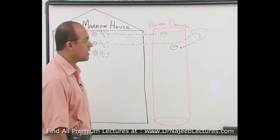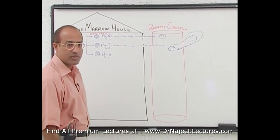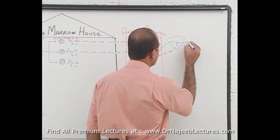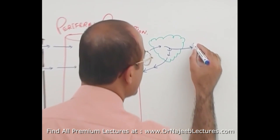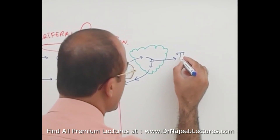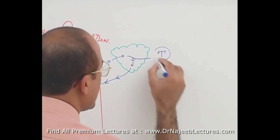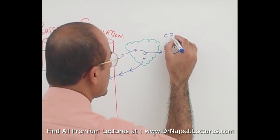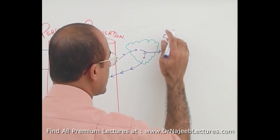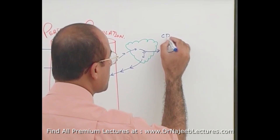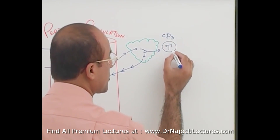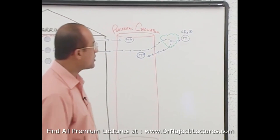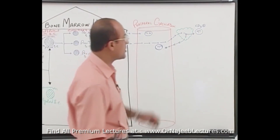They are now T lymphocytes. From the thymus, the T lymphocytes that come out are called CD3-positive. They have a unique protein on their surface called CD3, so T cells are CD3-positive cells.